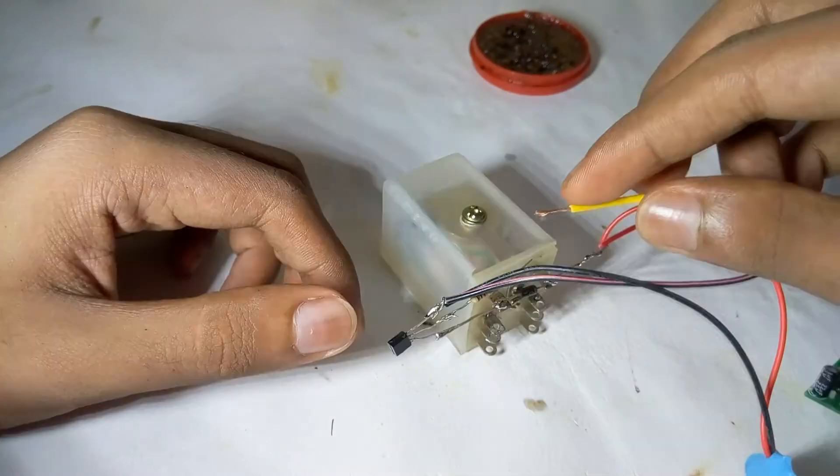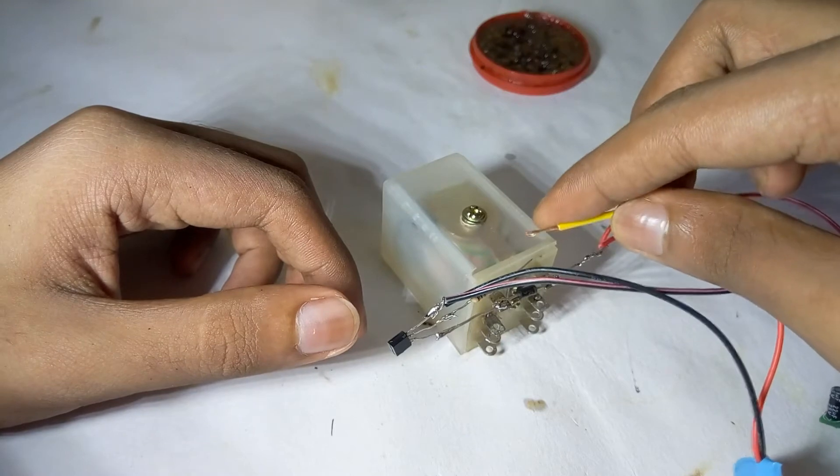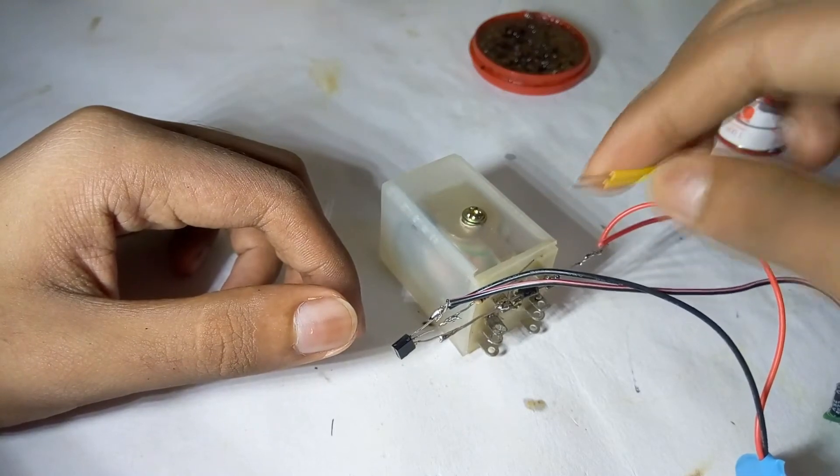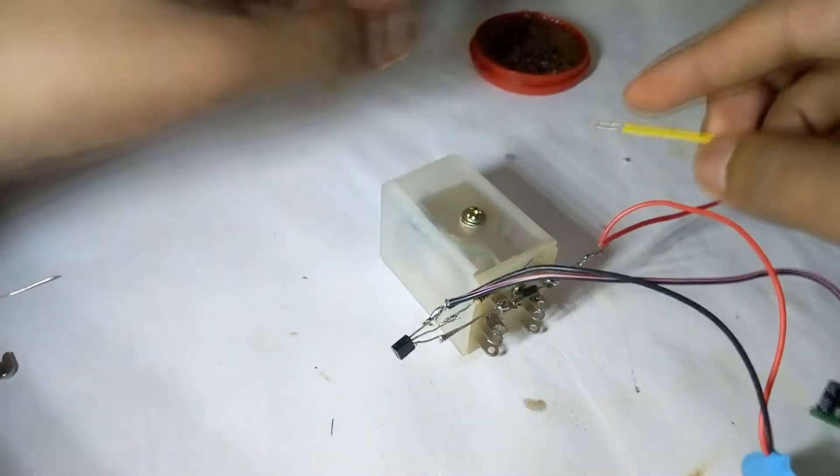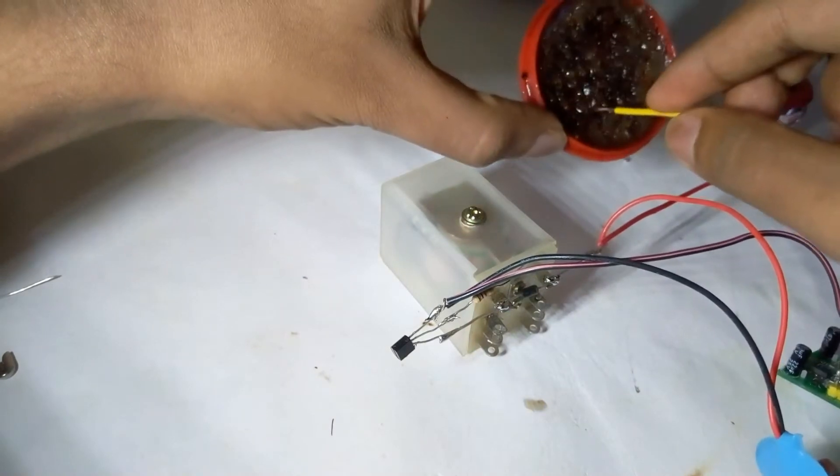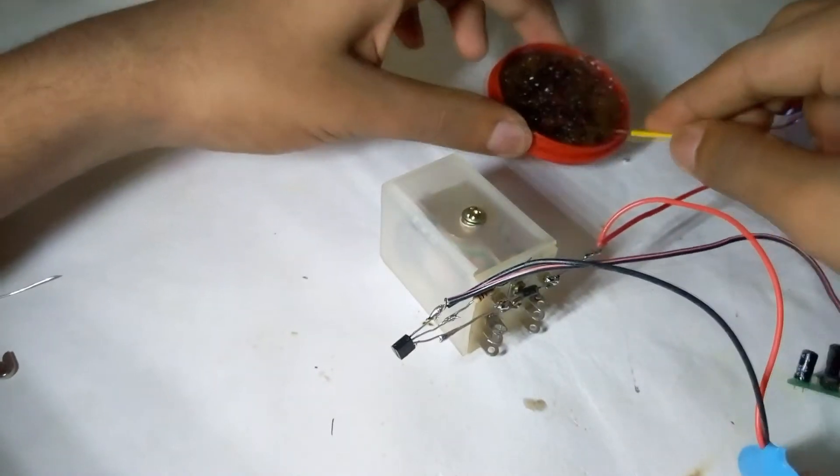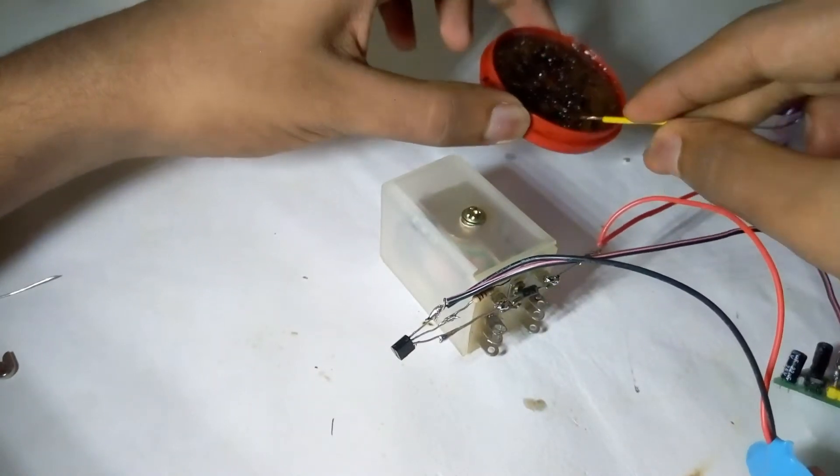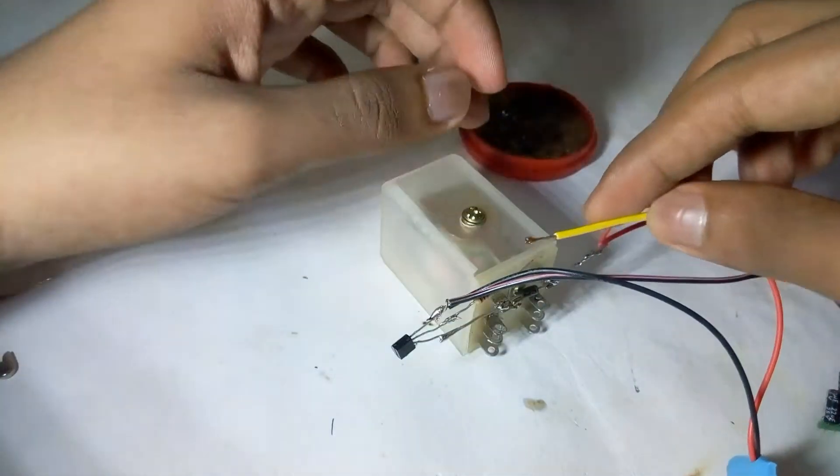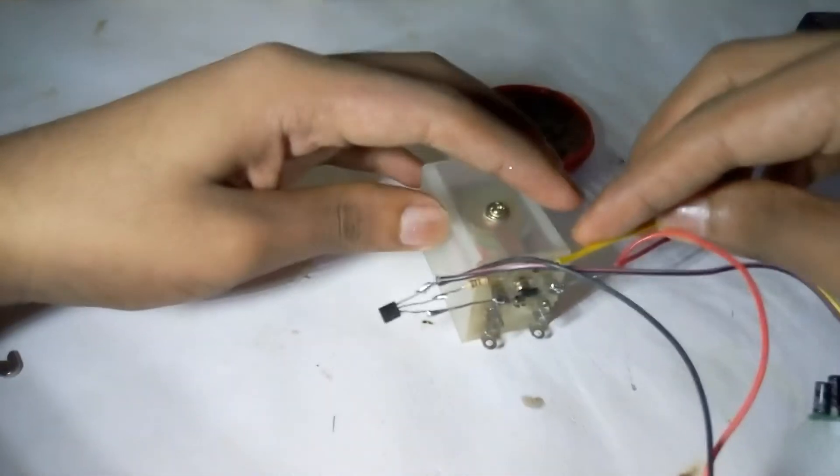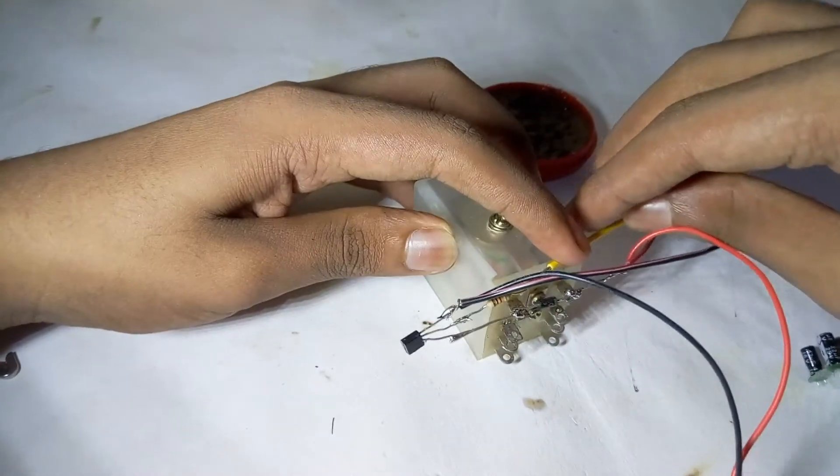Now connect our PIR sensor's out with the 1k resistor. I hope you can see, now you can clearly see it, just connect it over there.